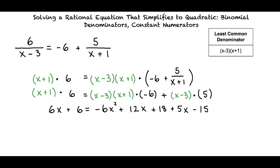Now we combine like terms from both sides of our equation. And our result is 0 equals negative 6x squared plus 11x minus 3.